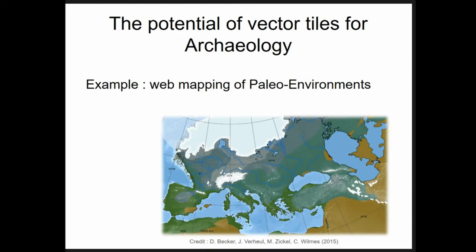One potential of vector tiles for archaeology is when you need to map changing environments. For instance, there is the problem of sea level in paleo-environments. In future years it will be much easier to build paleo maps — vector tile sets with different sea levels. The only thing missing for now is a bathymetric vector tile set. I know work is being done on open vector tile sets for terrain, but unfortunately there are no bathymetric data yet, so we can't build a map for the ice age era — but I'm pretty sure that will come in the next years.